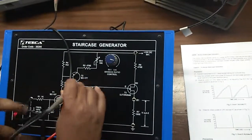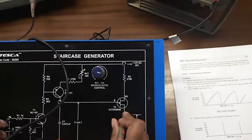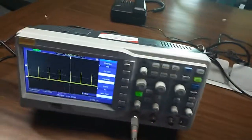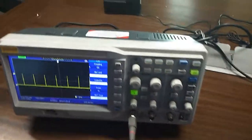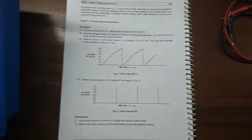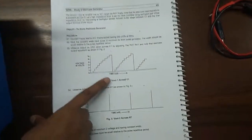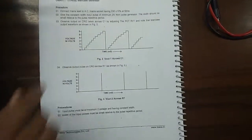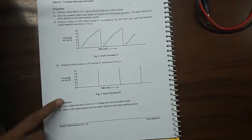Now, check the waveform across R7. Here, you will get this type of waveform. This is the staircase waveform, staircase generator waveform, and this is the output pulse across R7.